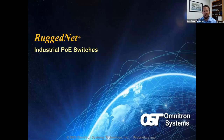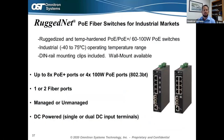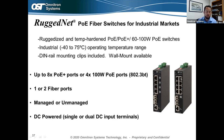The RuggedNet PoE family is ruggedized and temperature-hardened for industrial markets and outdoor applications. It supports the same PoE power levels as Omni Converter switches — up to 100 watts — but with an industrial temperature rating of -40 to 75°C. RuggedNet comes with a DIN rail mount included and wall mounting options available. It supports up to 100 watts per port on copper ports or up to 30 watts PoE+ on eight PoE ports. Note: some competitors advertise 100W PoE but that may be 100W shared across all ports — always verify whether power is shared or per port.